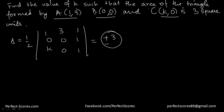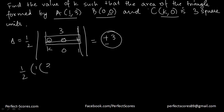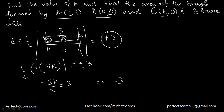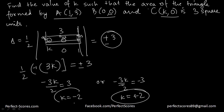Expanding the determinant using the second row — since two entries are 0, only the term 1 times the 2×2 submatrix of rows and columns remains, giving −3k. With the factor of one-half, we get −3k/2 equal to either 3 or −3. Solving gives k = −2 or k = 2, so either value of k works.